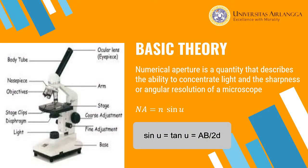For this slide, you will understand the figure of the microscope. The microscope consists of body tube, arm, stage, base, lens, and so on. The basic theory for the numerical aperture is the quantity that describes the ability to concentrate light and the sharpness or angular resolution of a microscope. The formula of the microscope you can see and read in this slide.